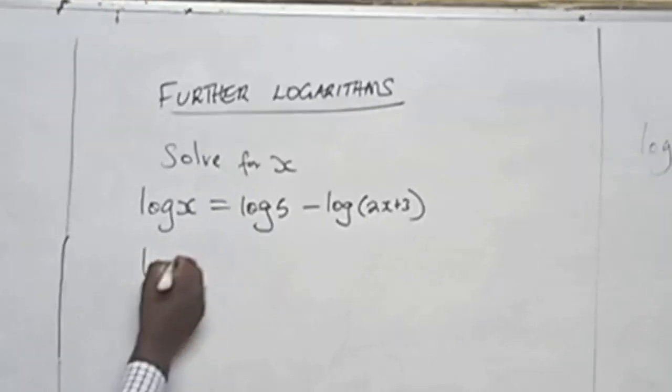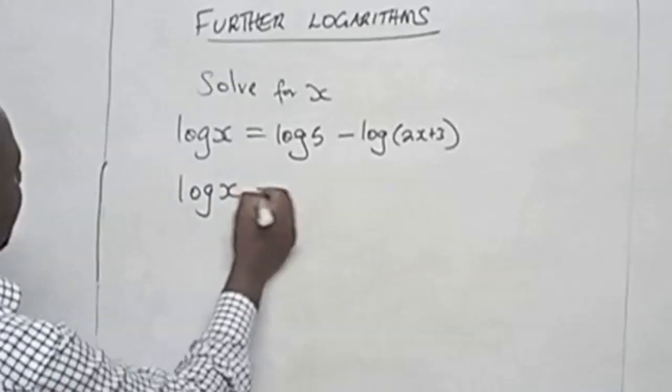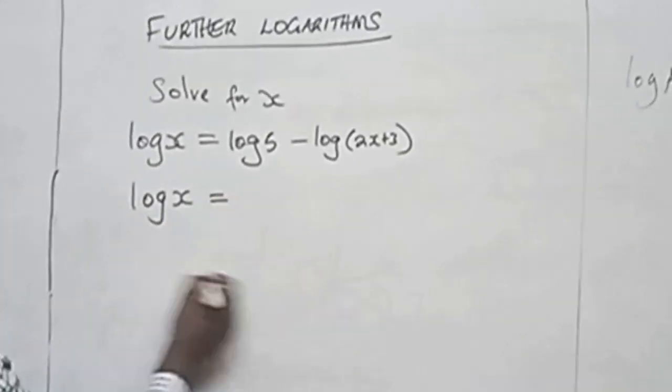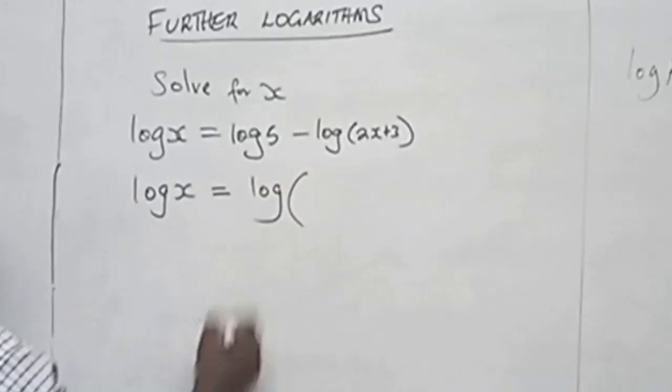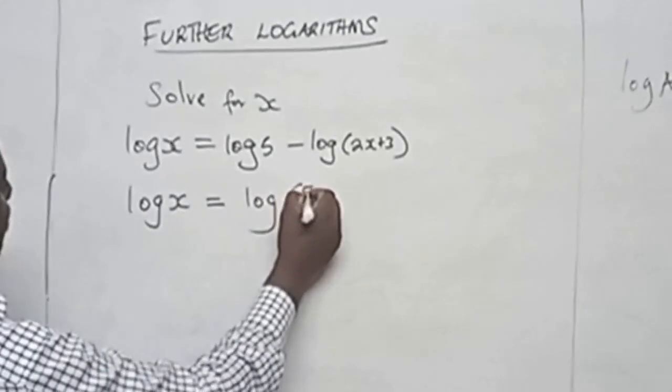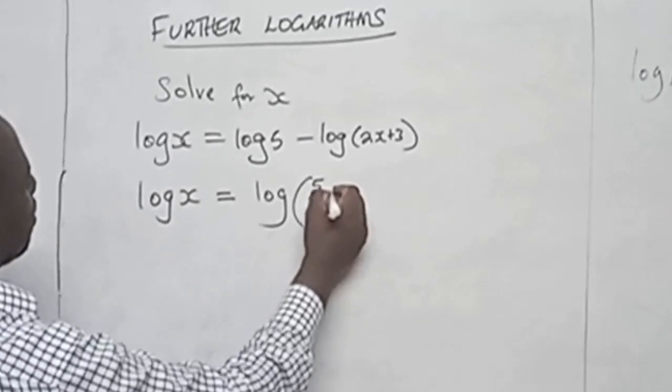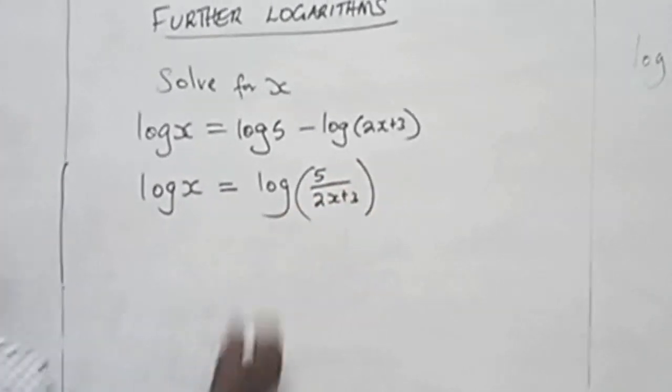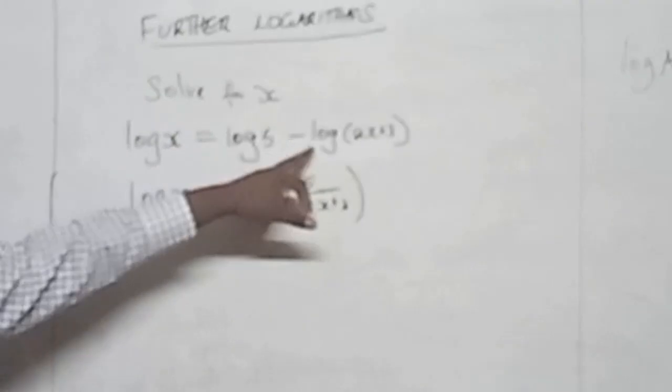Therefore log A minus log B is equal to log A over B. Therefore we are going to transform this equation and we are going to have log x on the left hand side and on the right hand side we are going to have log 5 over 2x plus 3. So we are taking care of this part here.